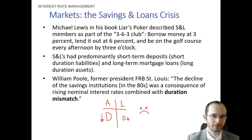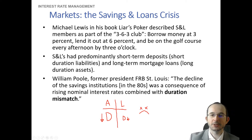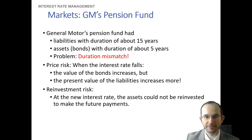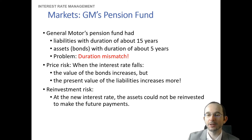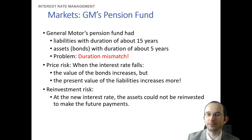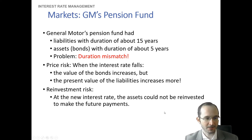We know the cure: if we duration match, we should be able to avoid this problem. Let's look at a practical implication for a pension fund. Say we have a liability with a duration of about 15 years — in other words, the average time at which we must make our payout is 15 years. And currently we have bonds in our portfolio with a duration of about 5 years. The problem is we have a duration mismatch: the duration of our liabilities is actually greater than the duration of our assets.